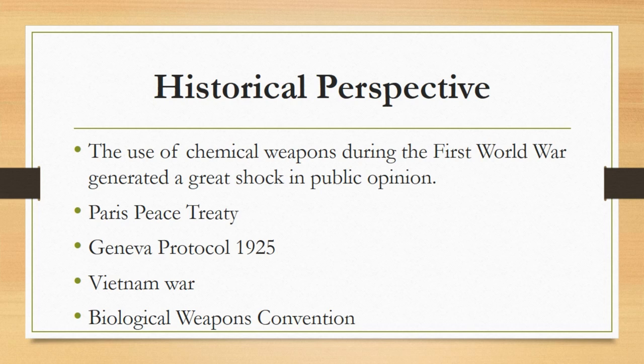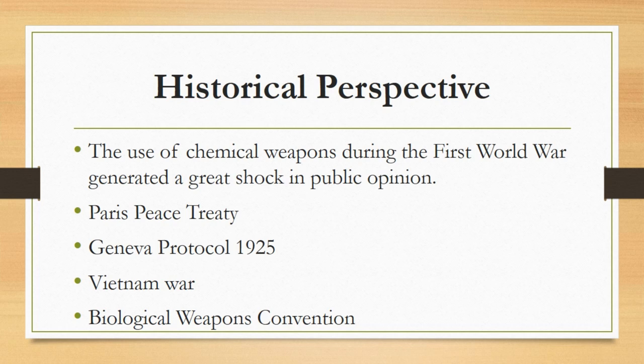The use of chemical weapons during the First World War generated a great shock in public opinion and soon triggered initiatives to ban these weapons — both their use and later their possession. These efforts started with the 1919 Paris Peace Treaties, which prohibited the possession of such weapons by the states which had lost the war. A prohibition on the use of these weapons, based on the language of the Paris Peace Treaties, was first stipulated in the Treaty for the Limitation of Naval Armament, adopted by the Conference on the Limitation of Armament held in Washington in 1922.